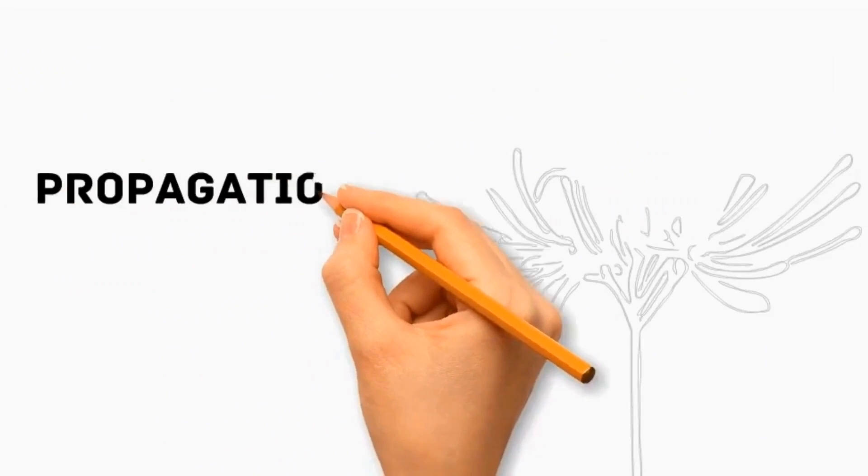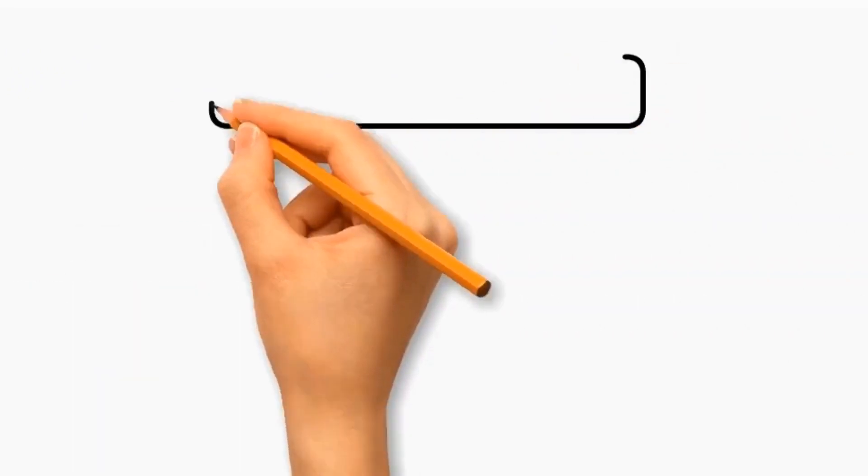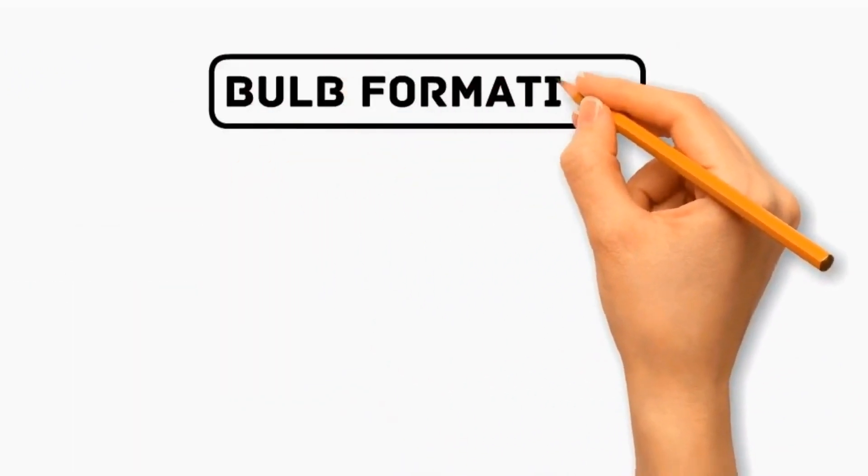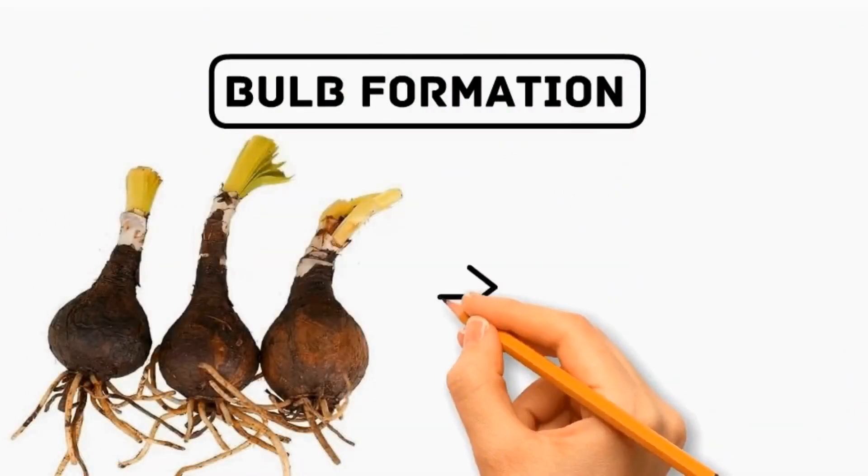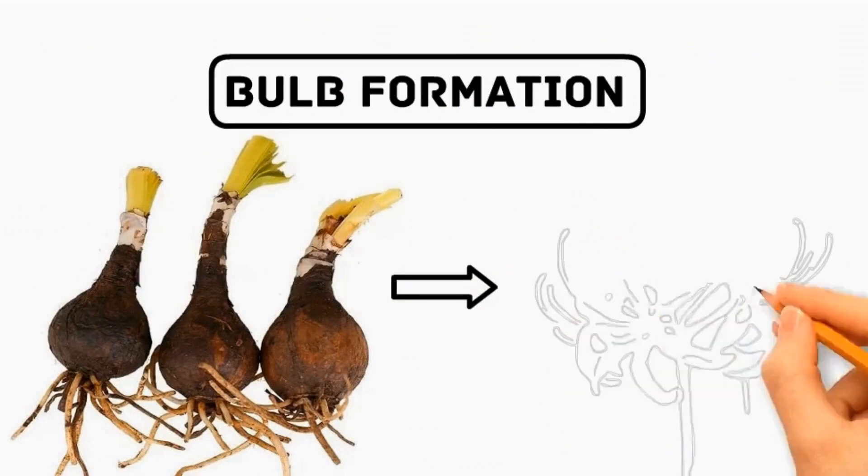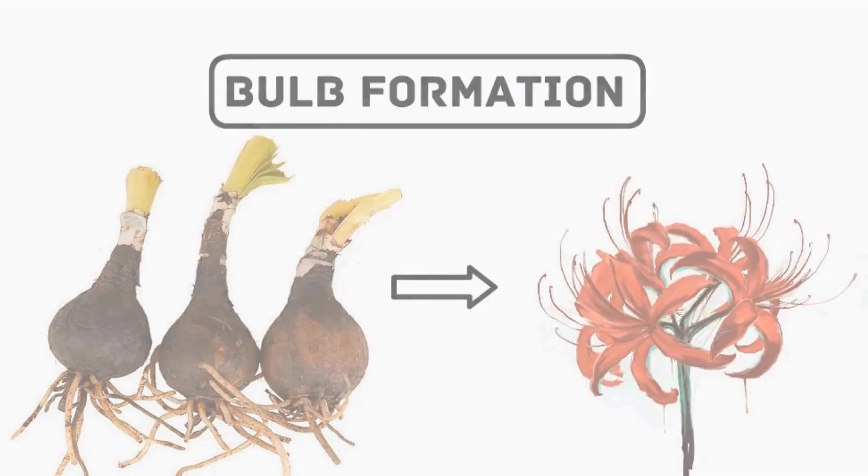Let's see the propagation of Red Spider Lily. Number one: Bulb Formation. Red Spider Lilies can produce small bulblets around the base of the main bulb. These can be carefully separated and planted to propagate new spider plants.